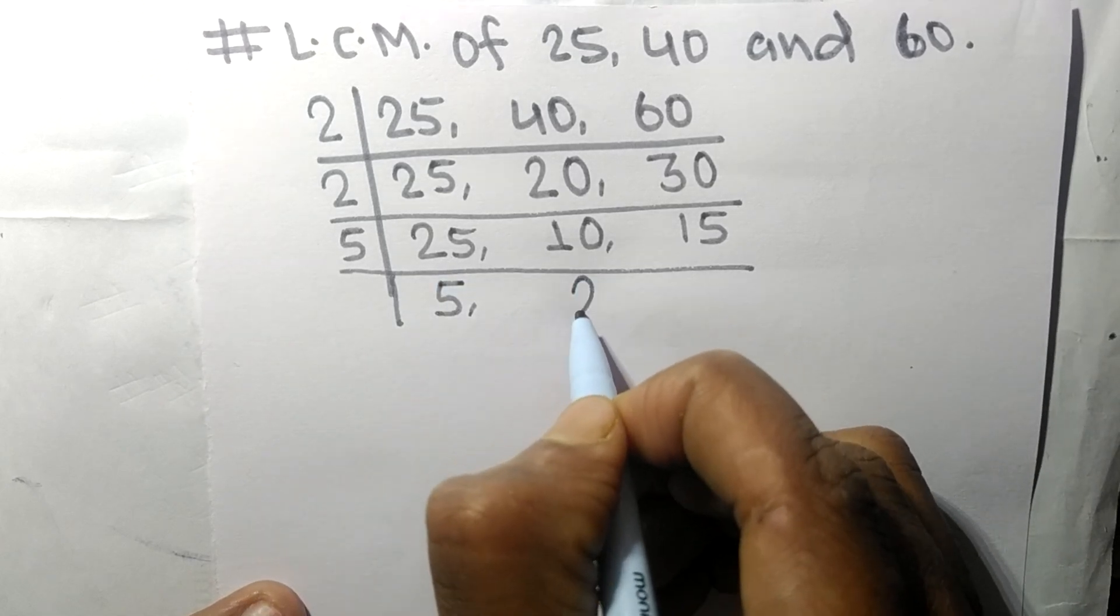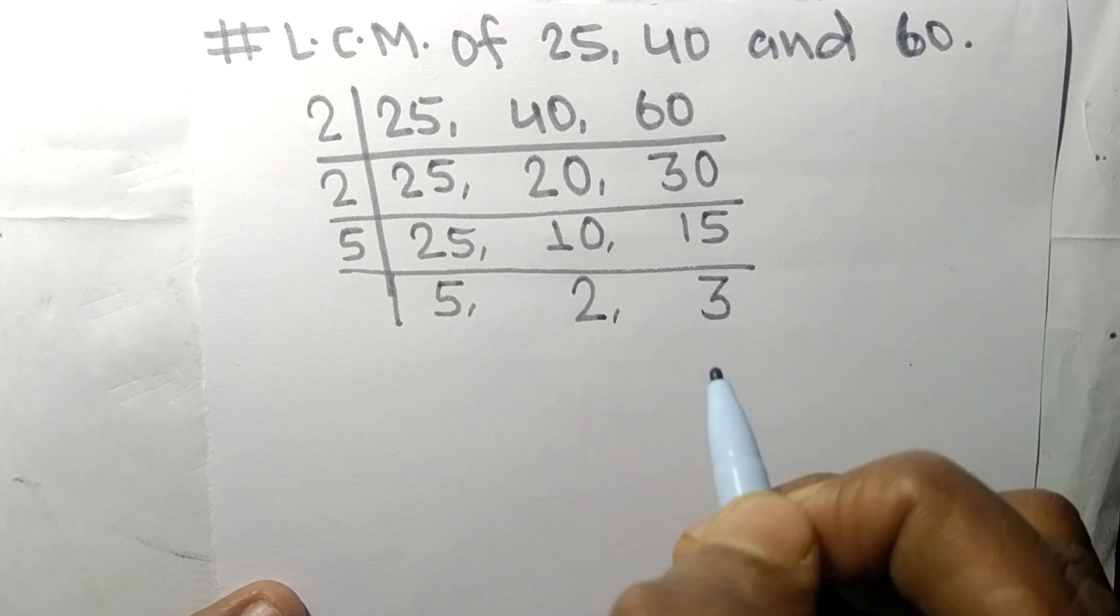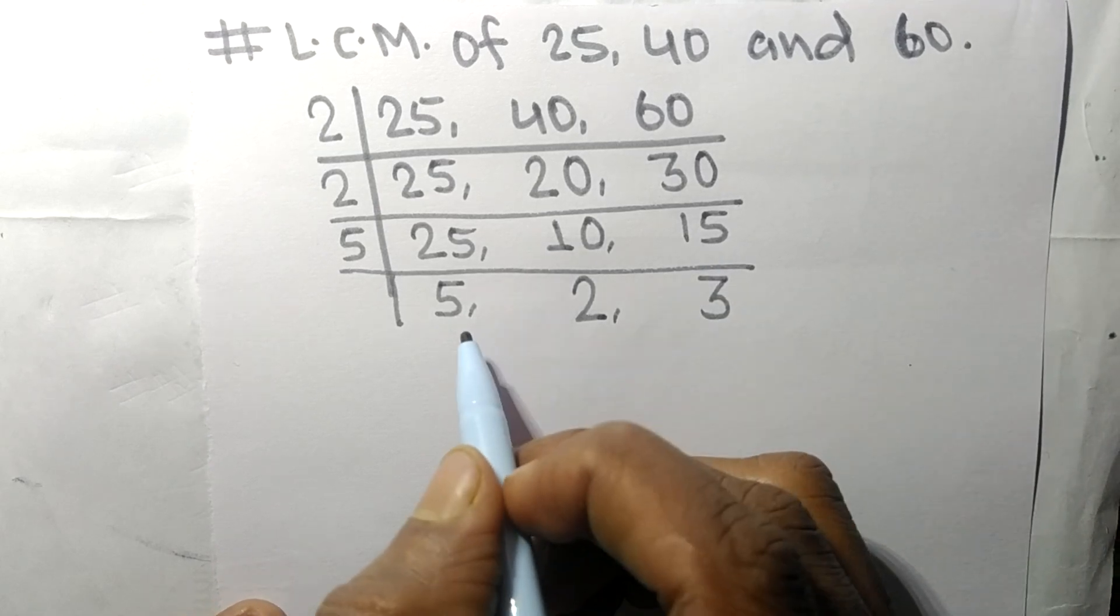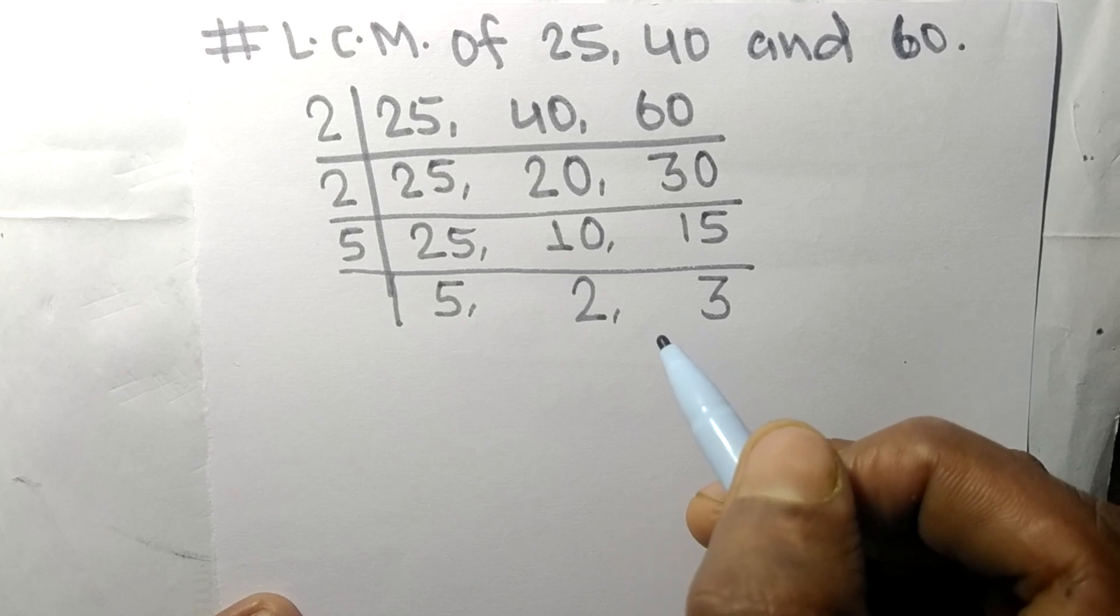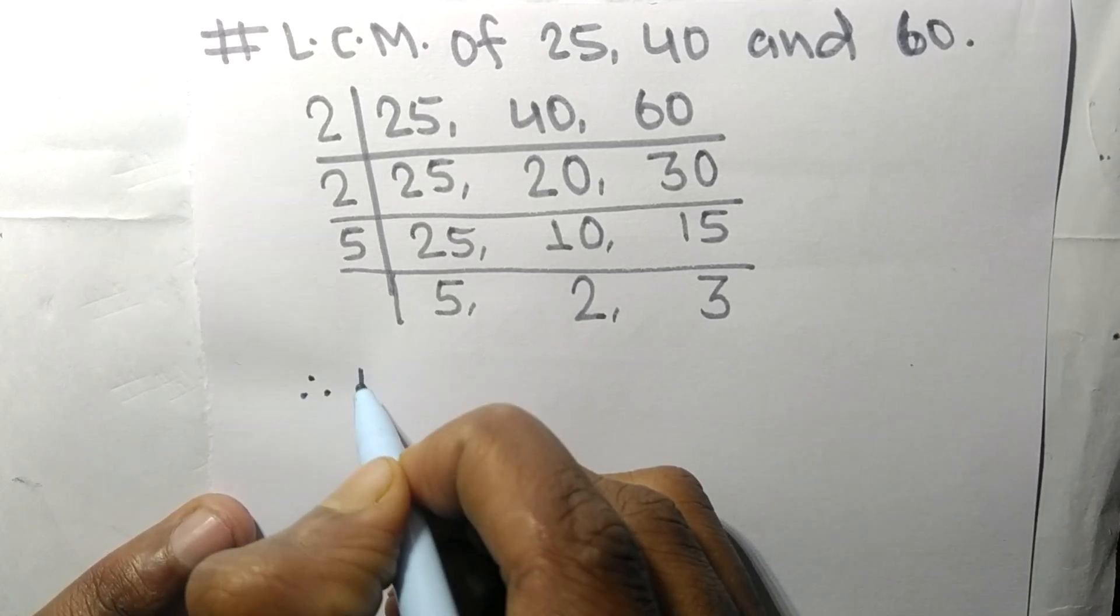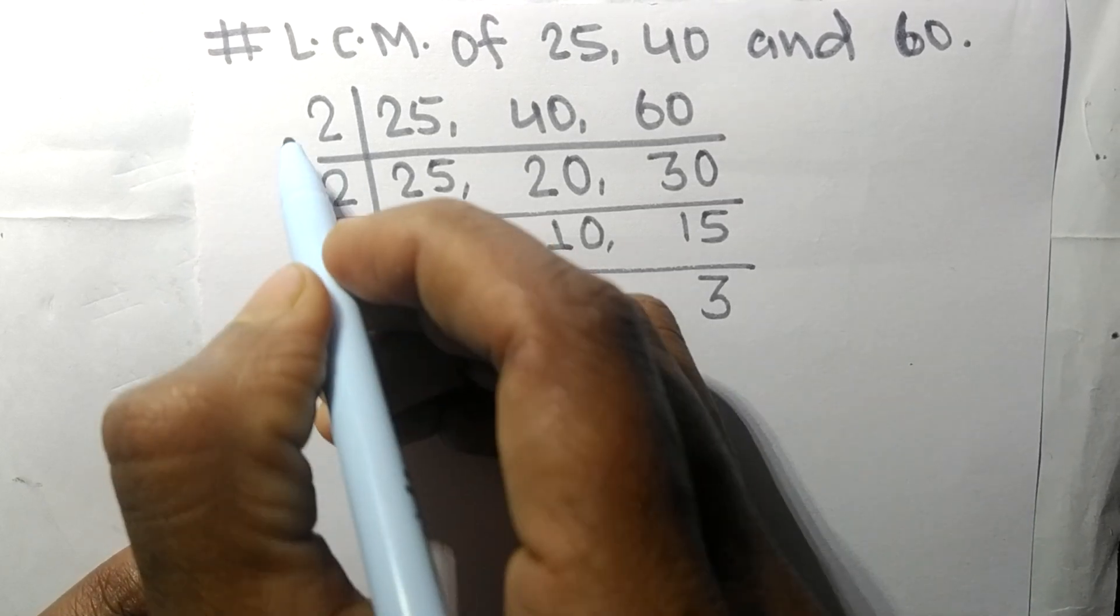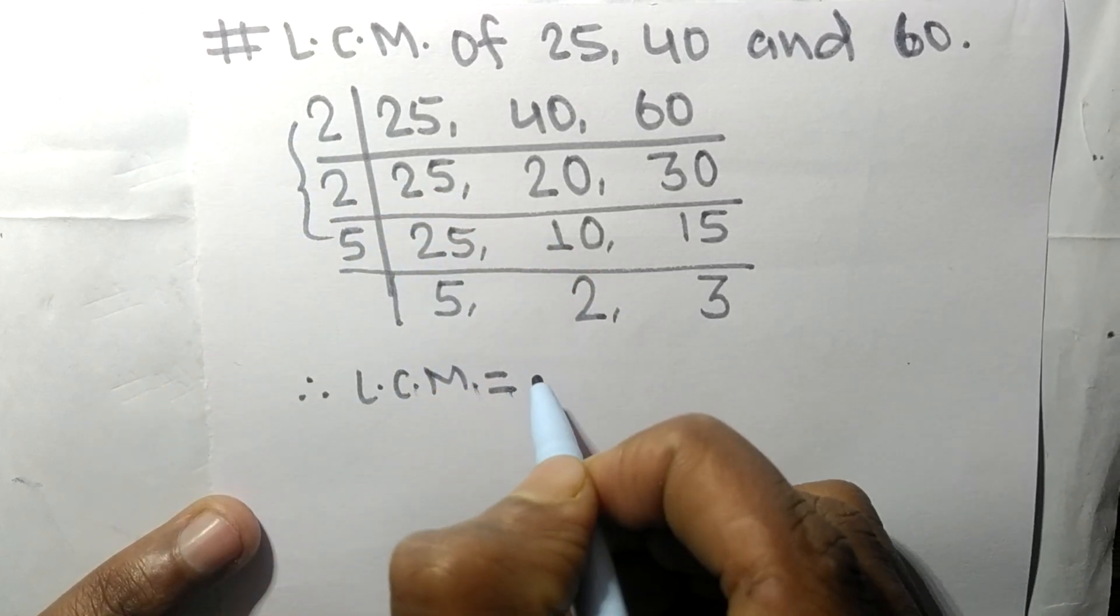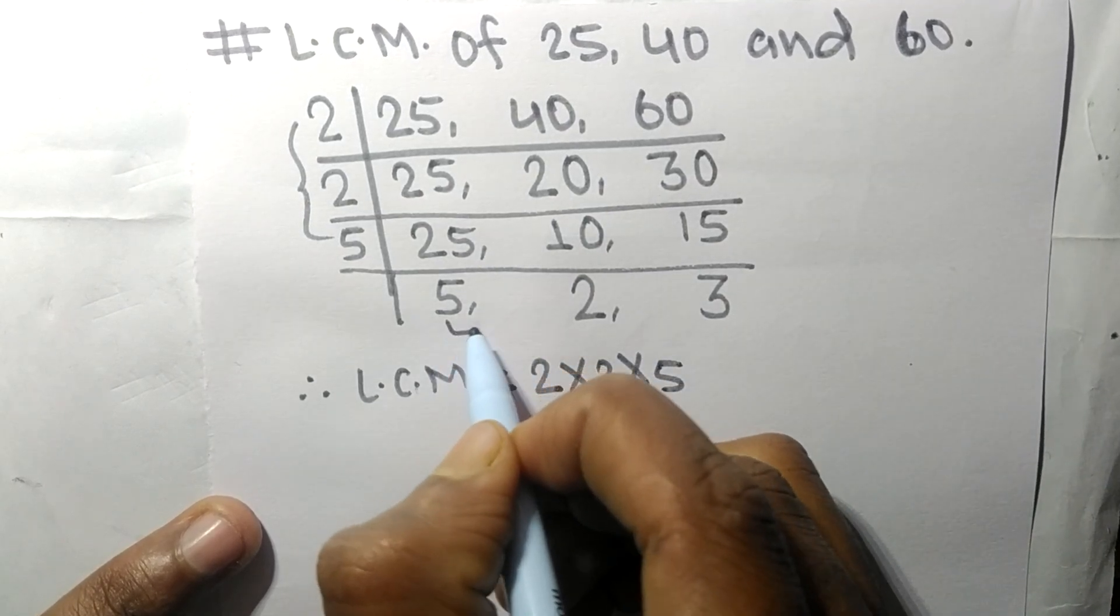So now this 5, 2 and 3 are not divisible by same number. Therefore its LCM is equal to, from this side it is 2 times 2 times 5.